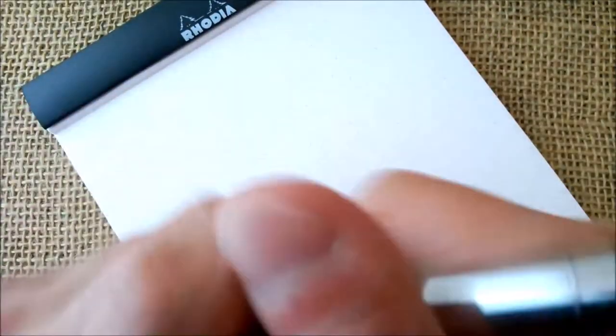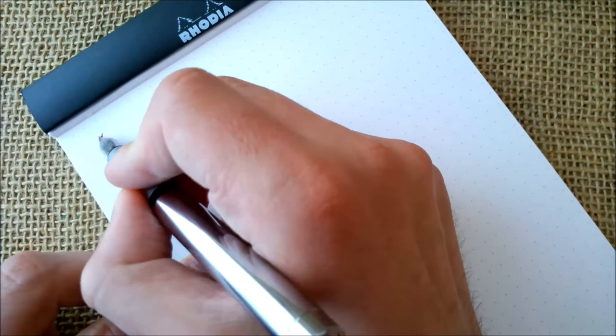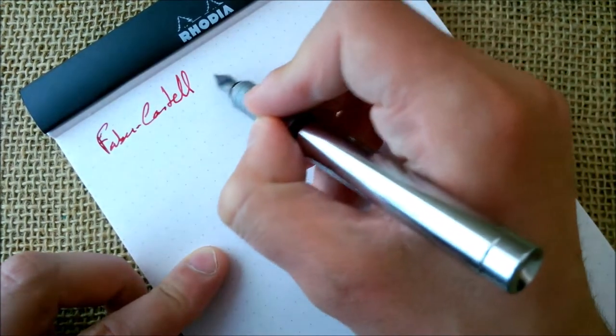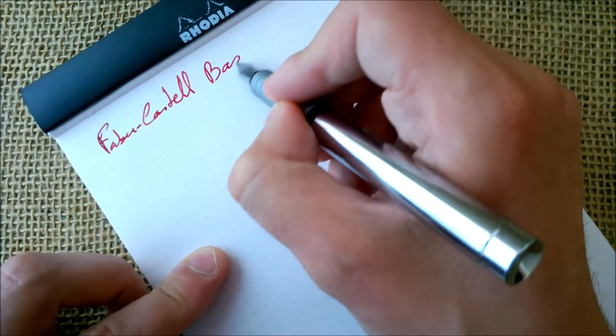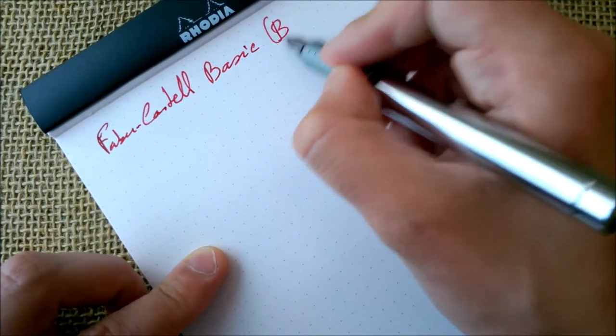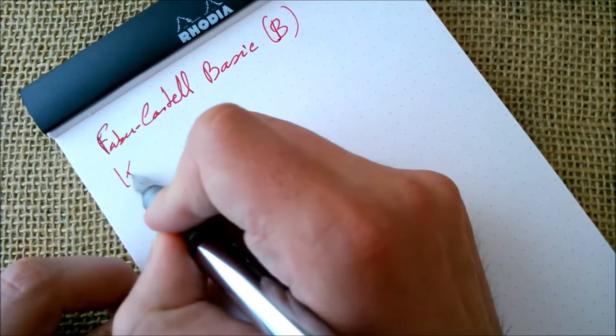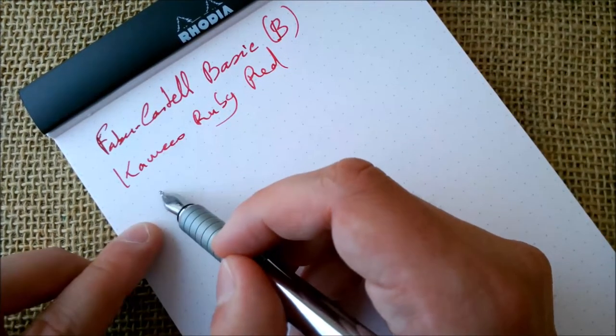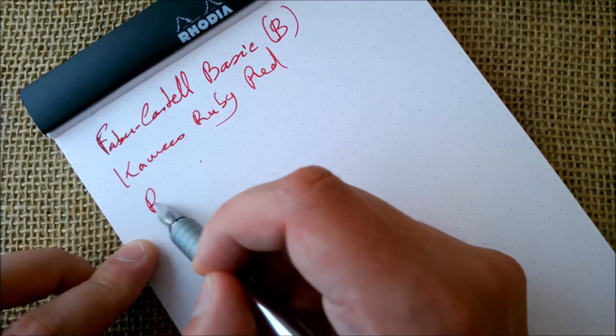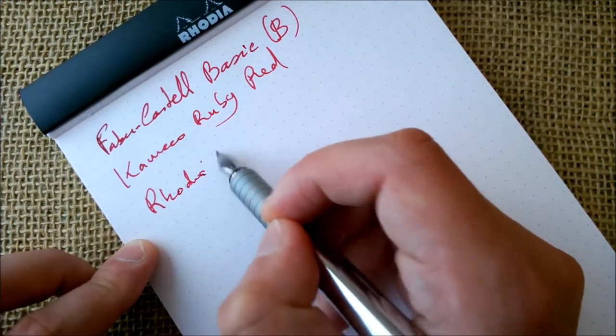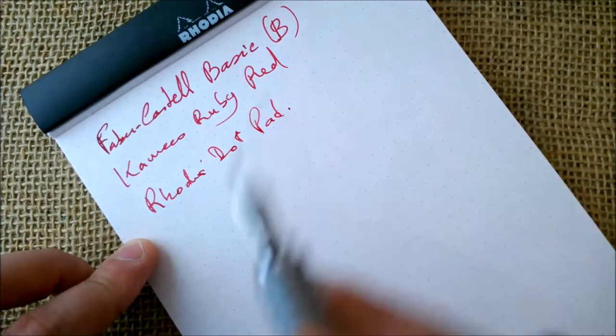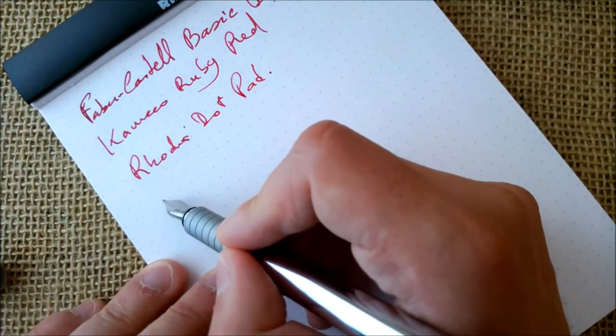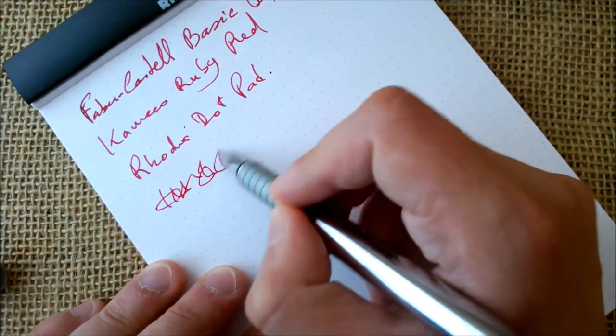And here we are. This is the Faber-Castell Basic with a B nib. The ink inside is the Kaweco Ruby Red and the paper is the usual Rhodia Dot Pad. So, about the writing of the pen.